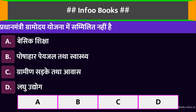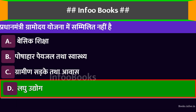प्रधान मंत्री ग्रामोदय योजना में सम्मिलित नहीं है। Option A: बेसिक शिक्षा। Option B: पोषाहार, पेयजल तथा स्वास्थ्य। Option C: ग्रामीण सड़कें तथा आवास। Option D: लघु उद्योग। सही विकल्प है: लघु उद्योग।